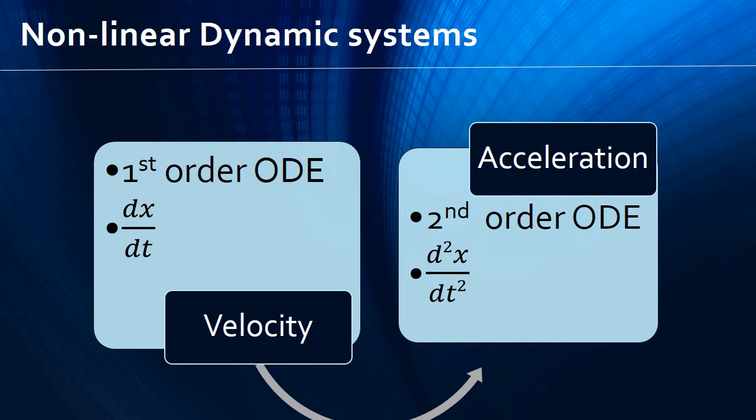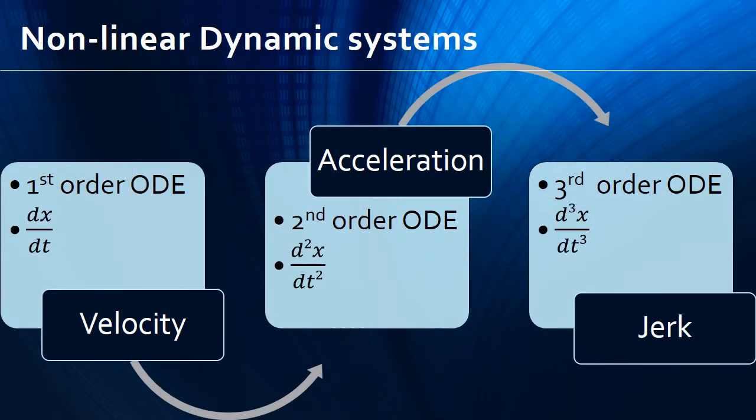So if a dynamic system expressed as its second-order ODE is said to be chaotic, it means that chaos is observed in the acceleration of the dynamic system. Climbing up the order of the derivative, next comes the third-order ODE which is expressed as d³x/dt³. This is called jerk.